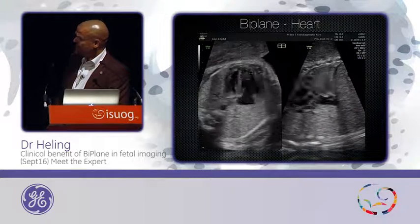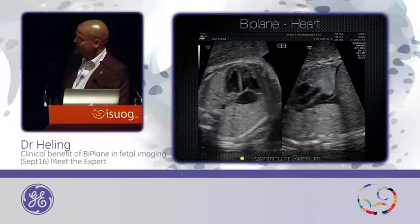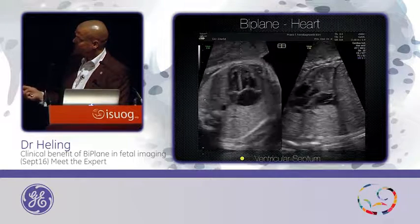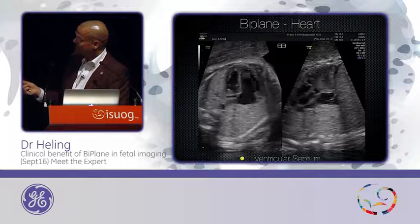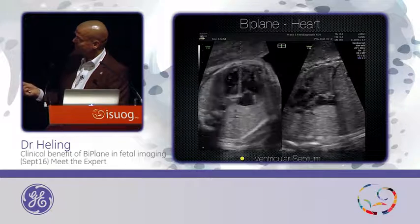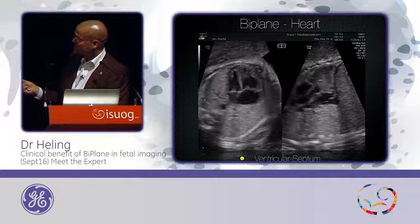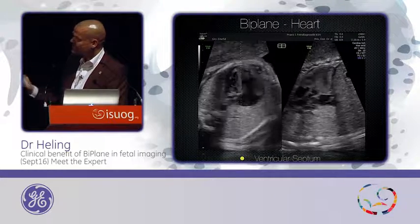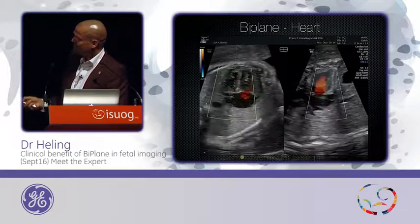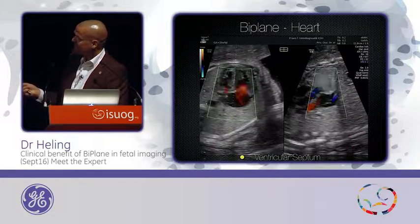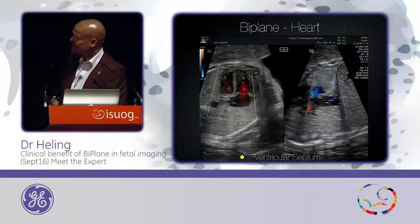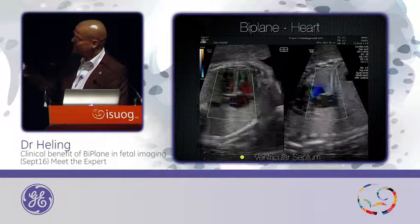One of the most exciting tools is the visualization of the interventricular septum. I put the line through the interventricular septum, and on the right side clearly you can see the whole interventricular septum — this is the apex of the heart, this is the level of the AV valves, and you see the left ventricular outflow tract with the aortic valve. When you expect a ventricular septal defect, there must be a black hole here. With color, you can confirm there is no overriding, allowing you to exclude a ventricular septal defect with a clear view of the septum.